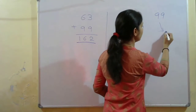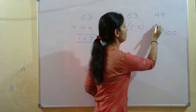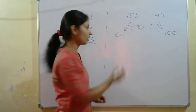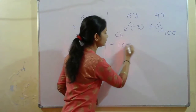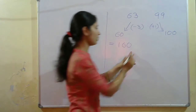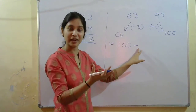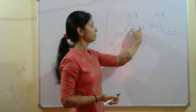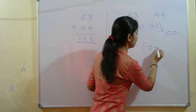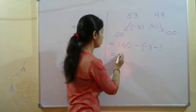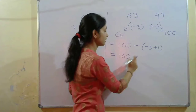Now, our next step is adding 60 and 100, which gives 160. Then I write a minus sign and subtract with the signed values. I have minus 3 and plus 1. So we do 160 minus (minus 3 plus 1). You can write the operation as minus minus plus, or simply compute minus 3 plus 1 equals minus 2 within the bracket.